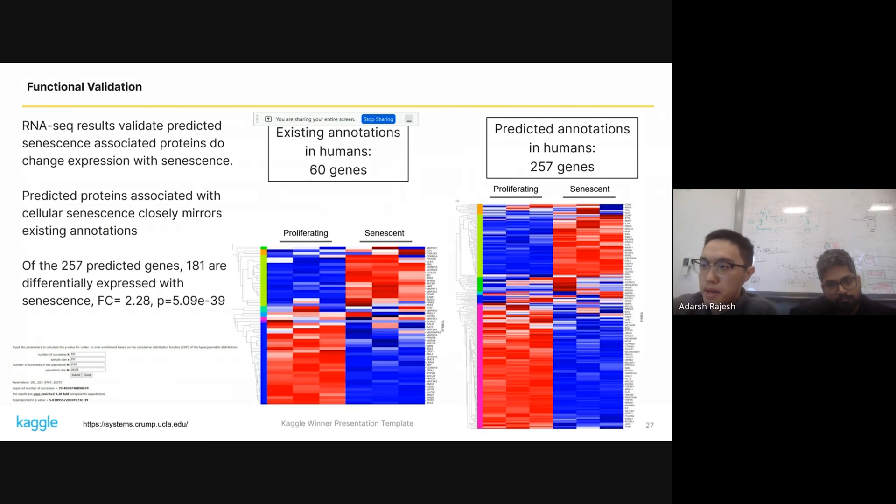So we actually found that comparing the existing genes that are annotated for cellular senescence and the predicted genes, we found very similar patterns in terms of the expression levels, expression patterns in our data sets. So you can see clearly when cells undergo senescence, most of these genes either dramatically increase or dramatically decrease. And we found that the enrichment score for these genes, which are predicted from our data, from our model is highly significant.